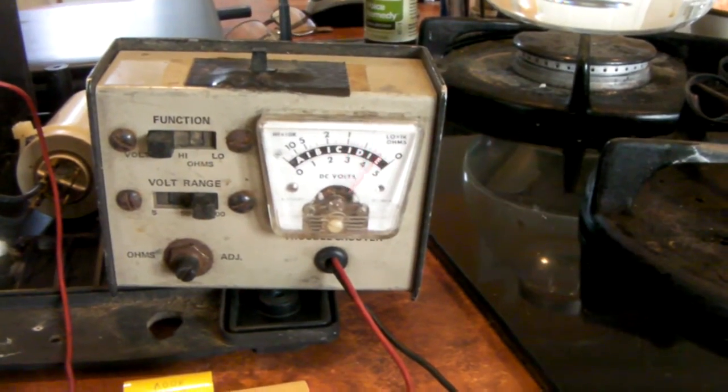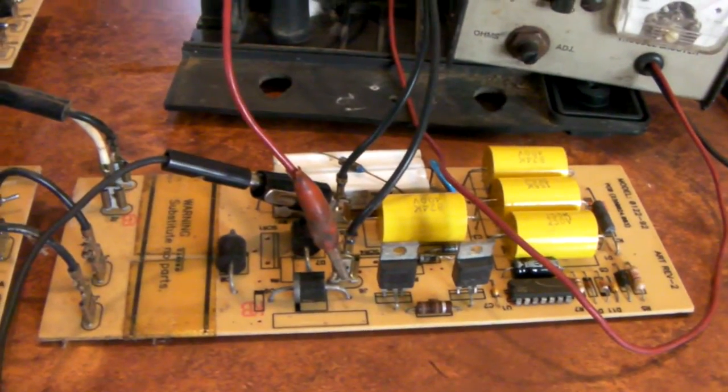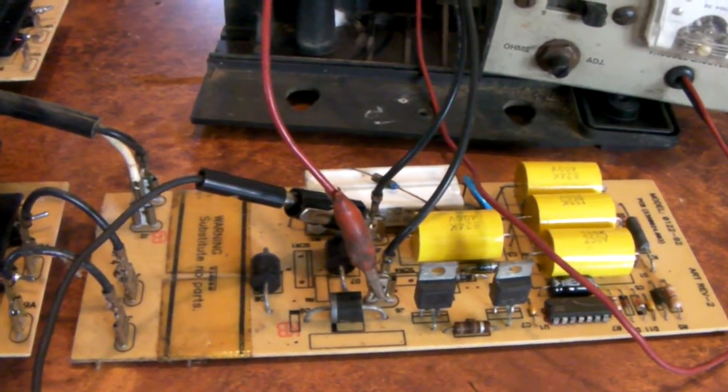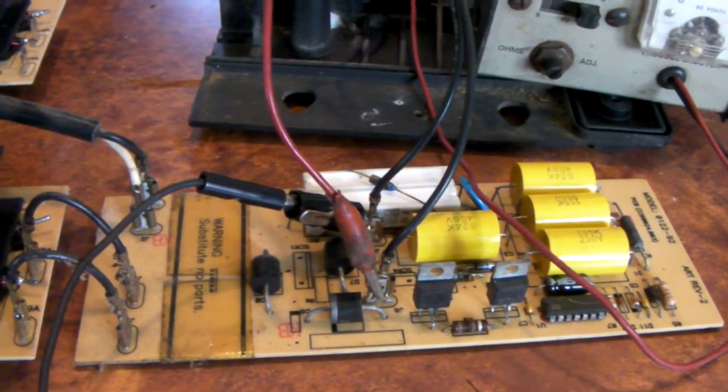That'll be about 500 volts, and when it's discharged it drops down. This is the input circuit board. It takes 115 volts and converts it to about 500 volts as far as I can figure.